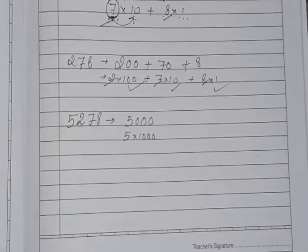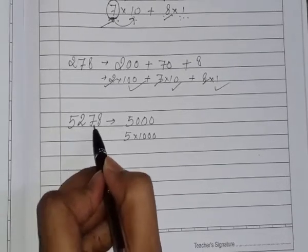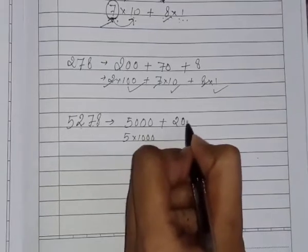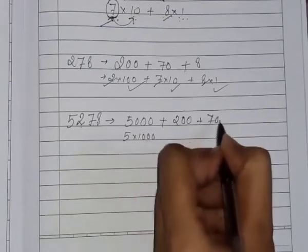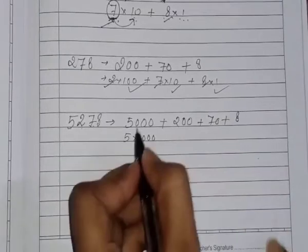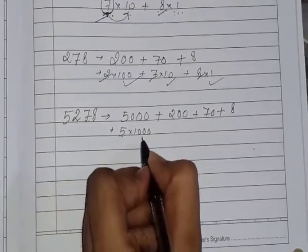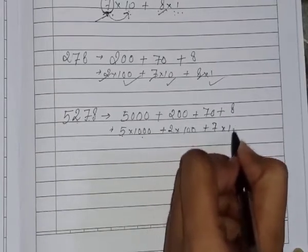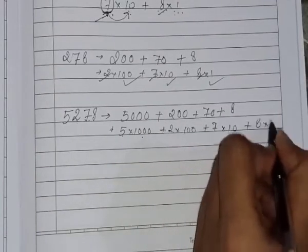Later on we extended this idea to 4 digit numbers. For example, 5278 can be written as 5000 + 200 + 70 + 8, or 5 × 1000 + 2 × 100 + 7 × 10 + 8 × 1.